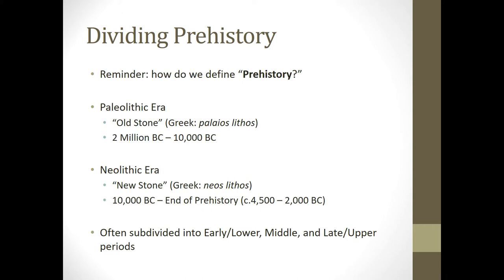We're going to say Paleolithic, Old Stone, from 2 million BC to about 10,000 BC, and the Neolithic Era from about 10,000 BC until the end of prehistory, which gets variously divided up. Some people say it's as early as 4500 BC, others say 2000 BC. These dates are not particularly important for our purposes, but understanding that there are these two halves — Paleolithic and Neolithic — that is important.